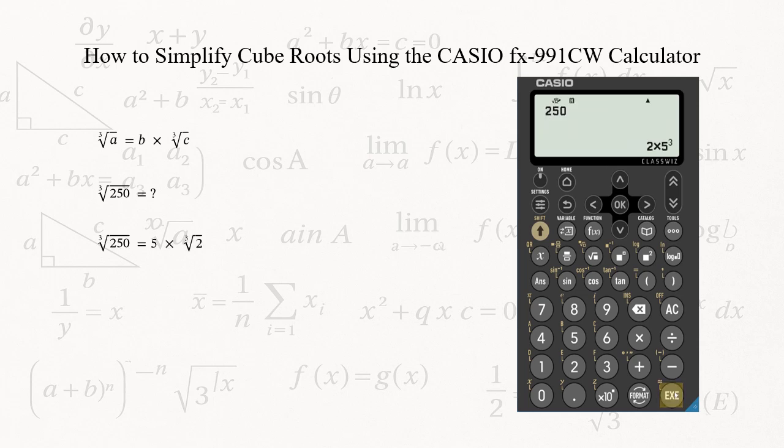The calculator shows 250 equals 2 to the first power times 5 cubed. Divide each exponent by 3. For 2 to the first power, 1 divided by 3 gives a remainder of 1, so the 2 stays inside the cube root.